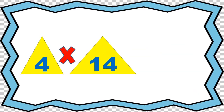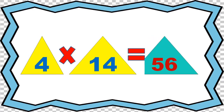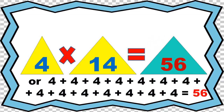4 times 14 equals 56, or 4 plus 4 plus 4 plus 4 plus 4 plus 4 plus 4 plus 4 plus 4 plus 4 equals 56.